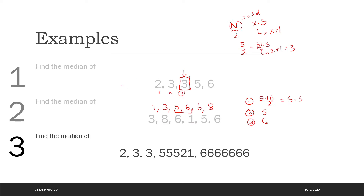The third example looks very similar to the first one — there are five observations and the first three are the same, but the other two observations are very different. Interestingly, there are still five observations in total and the value towards the middle is still 3. The median doesn't change — the extreme values have changed, but the median hasn't been affected by them.